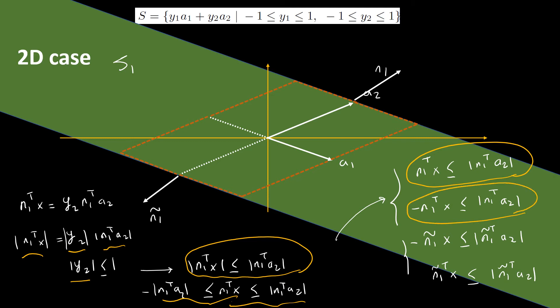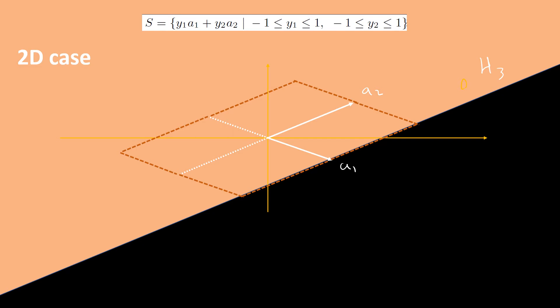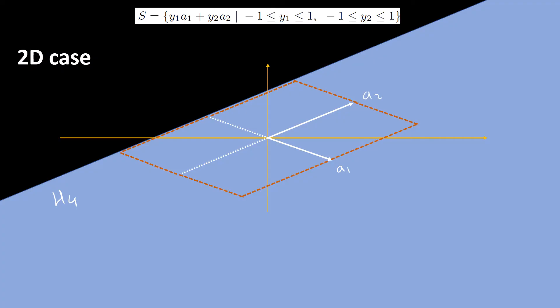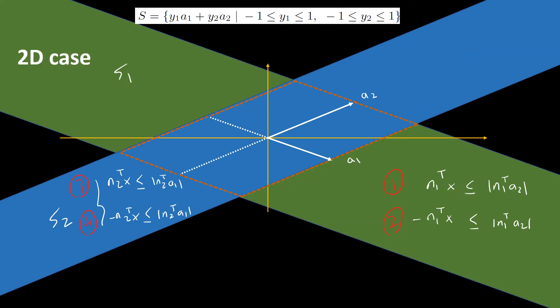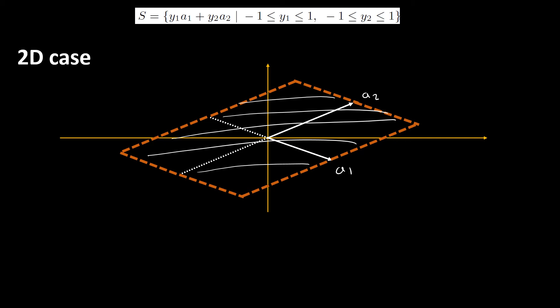We can rewrite the inequalities in terms of n1-tilde, but since it makes no difference we use n1. We also pick half-spaces H3 and H4 so that their intersection is along a2, using a similar argument. These give us two more inequalities and two more half-spaces. The intersection of S1 and S2 is our parallelogram, characterized by four inequalities, and it is indeed a polyhedron since it is represented as the intersection of four half-spaces.